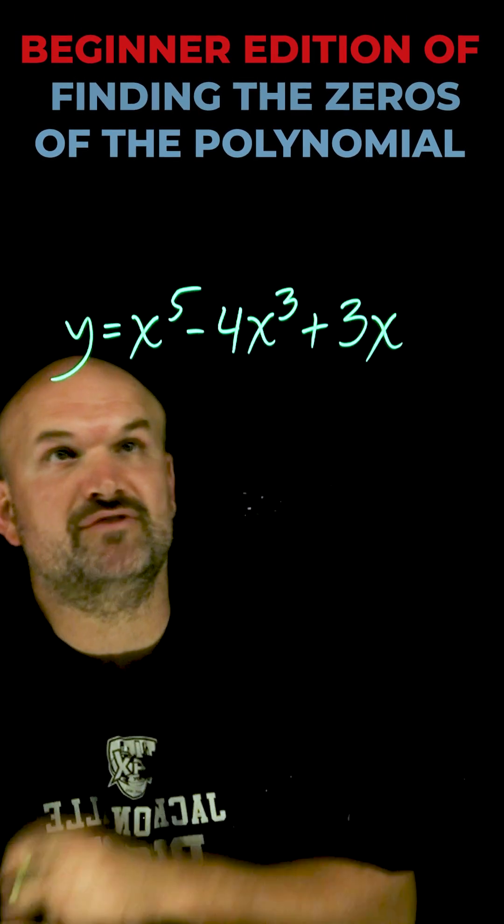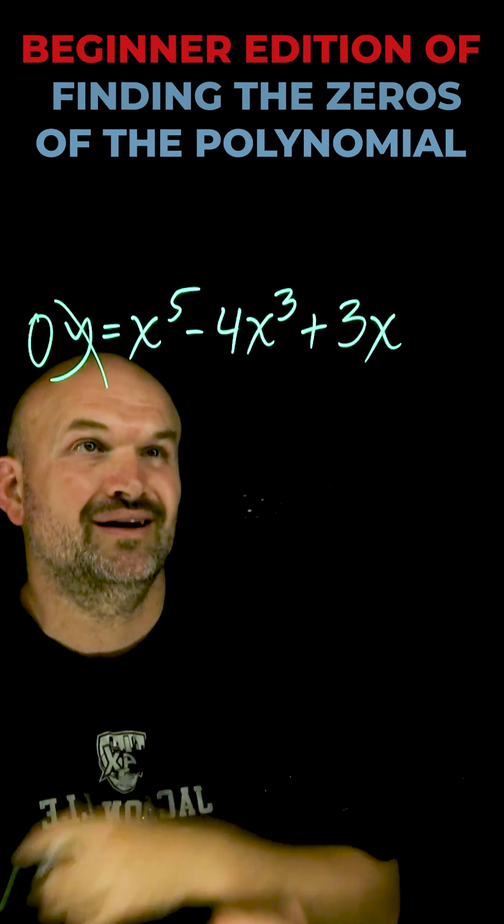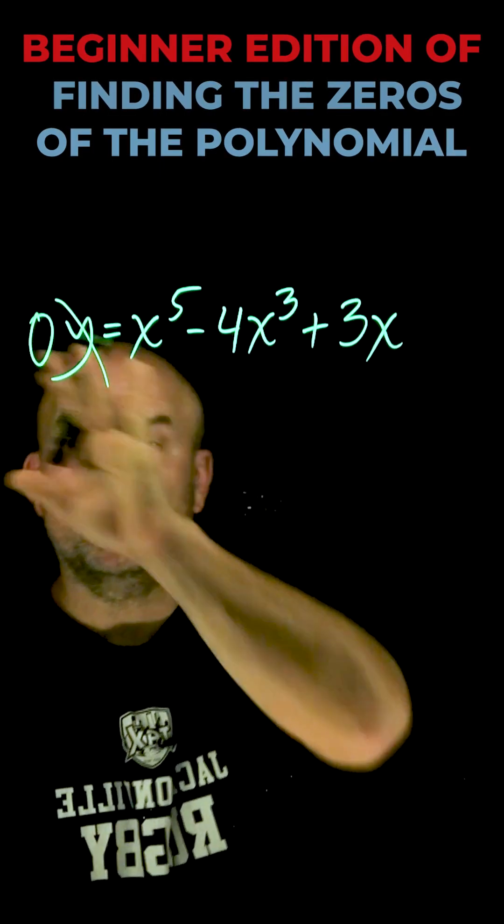Let's go and find the zeros of this polynomial function raised to the fifth power. First thing I'm going to do is replace y with zero. The reason being, we want to be able to find the values of x that are going to satisfy the equation when it's equal to zero.